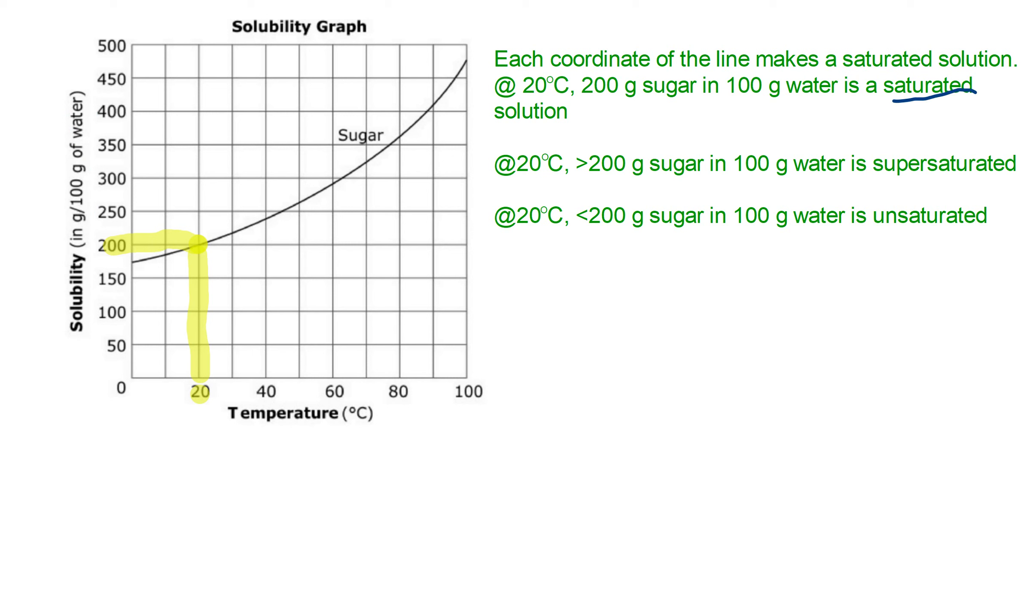Now, if I dissolve more than 200 grams of sugar at 20 degrees Celsius, then I have a super-saturated solution. It's holding more than it normally would. If I have less than 200 grams, we call that unsaturated.